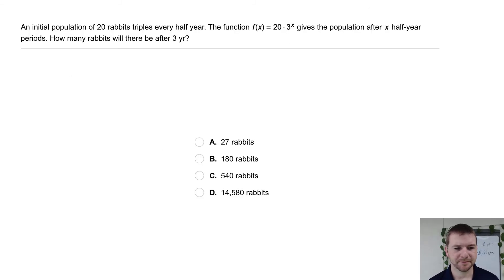Your turn. An initial population of 20 rabbits triples every half year. The function f(x) = 20 × 3^x gives the population after x half-year periods.